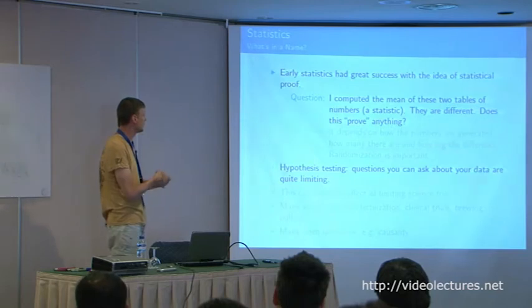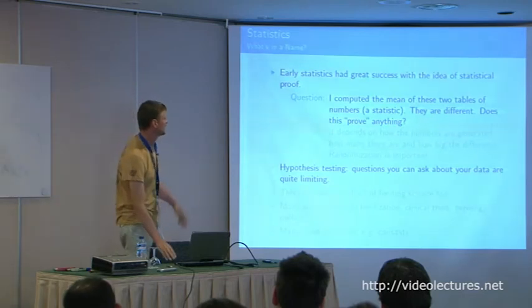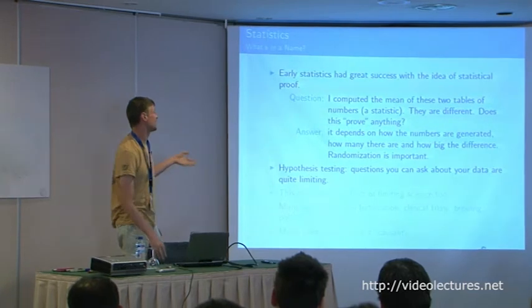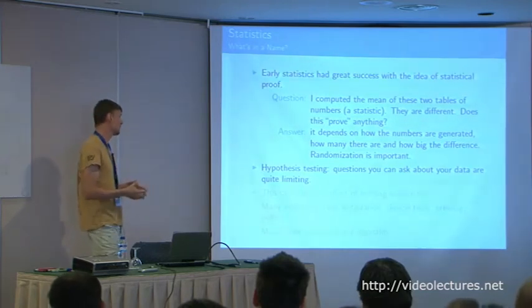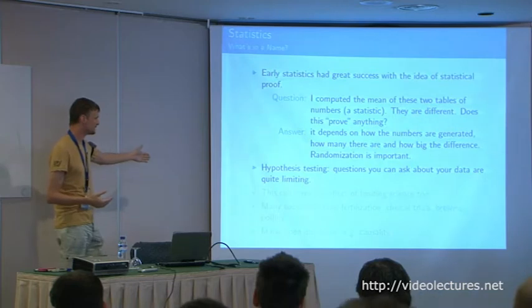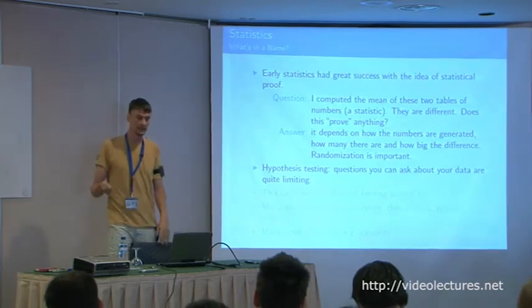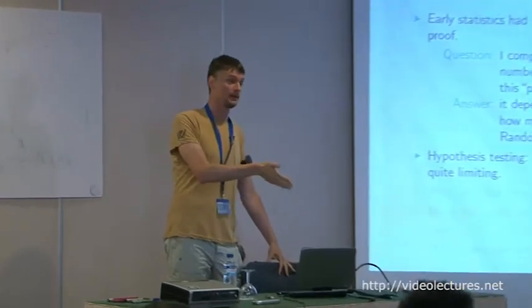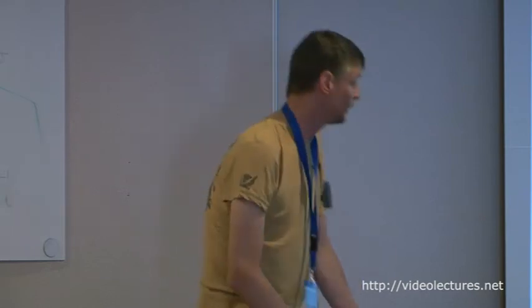Early statistics had a lot of success with the idea of statistical proof — I computed the mean of these two sets of numbers and they're different. Does this prove anything? It depends on how many numbers, how large the difference, whether you randomized samples, and so on. This leads to hypothesis testing. I work in an institute with doctors and they always ask me to compute a p-value for every experiment. It's important, but it's not what I'm interested in.